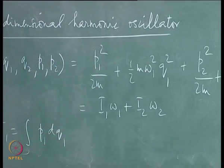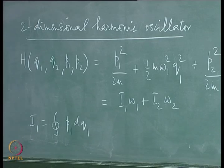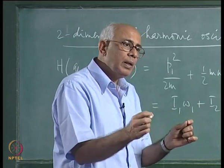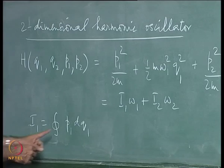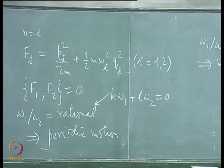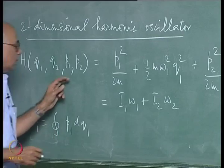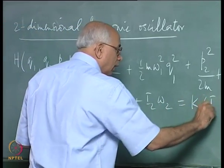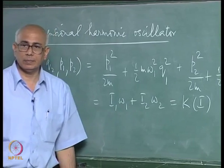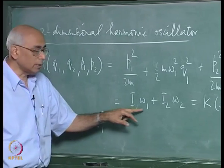The action variable I1 is twice the integral from a to b of p dq over the corresponding orbit. Similarly for I2. These are canonical variables, and then this Hamiltonian K(I) does not depend on the angle variables but only on the action variables — it is linear in the two action variables. Action has dimensions of energy times time, and frequency is inverse time, so their product has dimensions of energy.